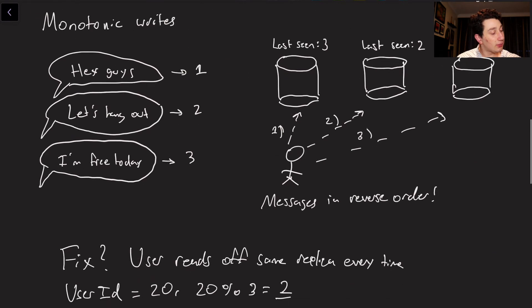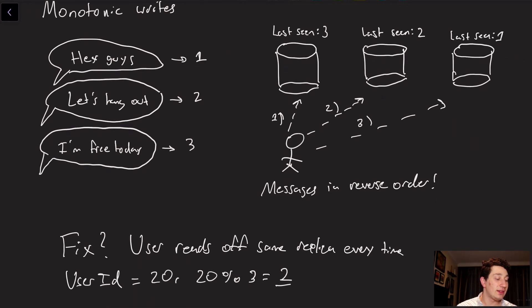Okay, let's now go on to something called monotonic writes, or in this case, the lack thereof. So let's say we've got one group chat over here on the left where I send three messages: Hey guys, let's hang out, I'm free today. And that has message IDs one, two, and three respectively.